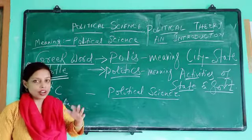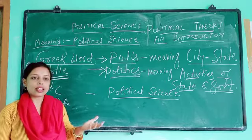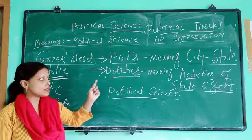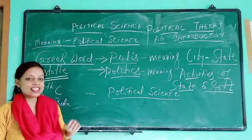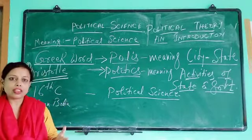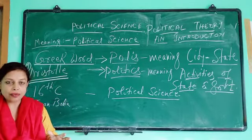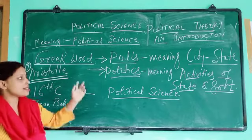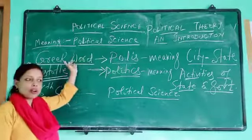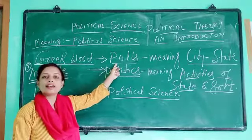Because the population was small, they formed what is called a city-state. In a city-state, one of the activities that constitutes political life is known as the city-state. So 'polis' means the activities revolving in the city-state.